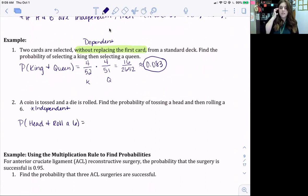Okay, so the probability of tossing a head when we flip a coin would be 1 half times the probability of rolling a 6 would be 1 over 6. So let's multiply straight across, and we're left with 1 over 12, which rounds to be 0.083.